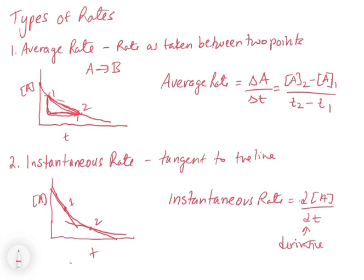Now, the instantaneous rate is a little bit more complicated. You would need to know what the function of that graph is. So we would need to actually write this as a function, meaning the concentration of A versus T.